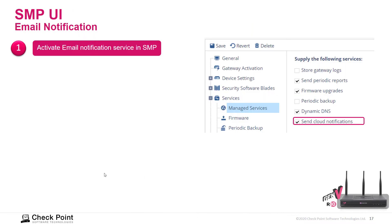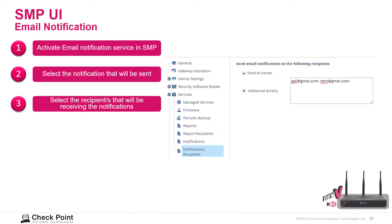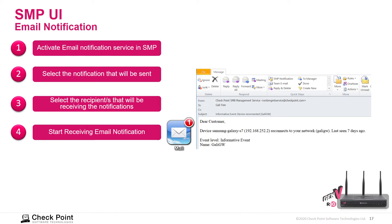Email notifications: if we activate the email notification service via SMP, we can enable periodic reports, firmware upgrades, dynamic DNS, and cloud notifications. We can select which notifications are sent — security incidents, networking events, operational events — and specify the recipients' email addresses, separated by semicolons.